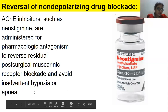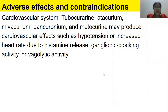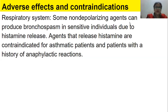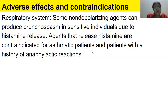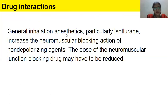Regarding adverse effects: cardiovascularly, tubocurarine, atracurium, vecuronium and others may produce hypotension or increased heart rate due to histamine release, ganglionic blocking activity, or vagolytic activity. For the respiratory system, some non-depolarizing agents can produce bronchospasm in sensitive individuals due to histamine release. Agents that release histamine are contraindicated in asthmatic patients and those with a history of anaphylactic reactions.